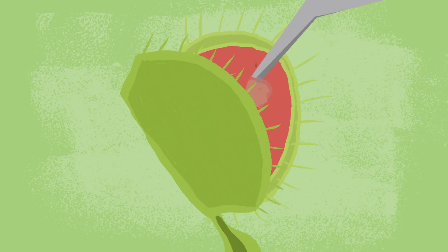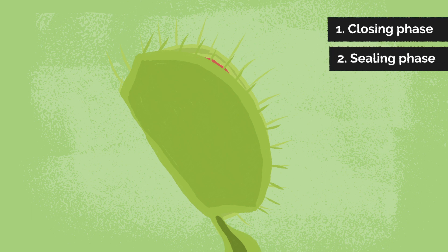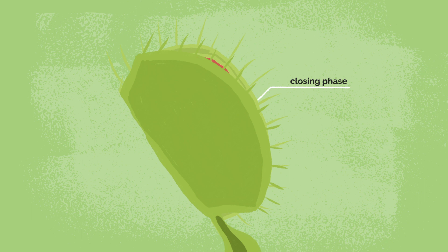Place the food into the trap and touch the inside trigger hairs a few times. Remember, the traps work in two phases: closing phase and a sealing phase. Without sealing, no digestion will occur.